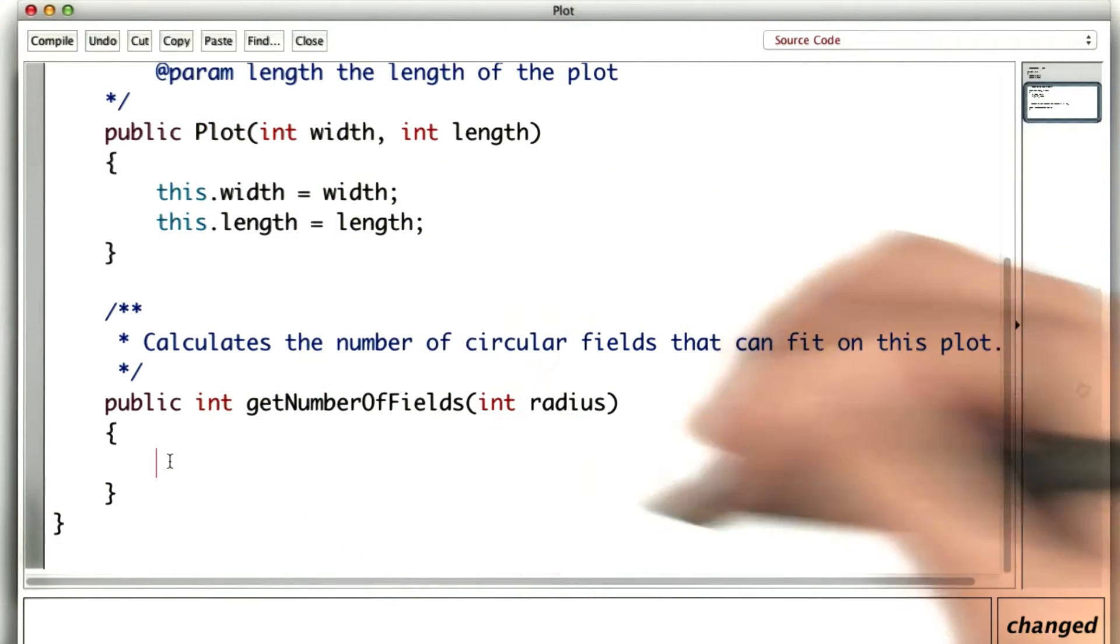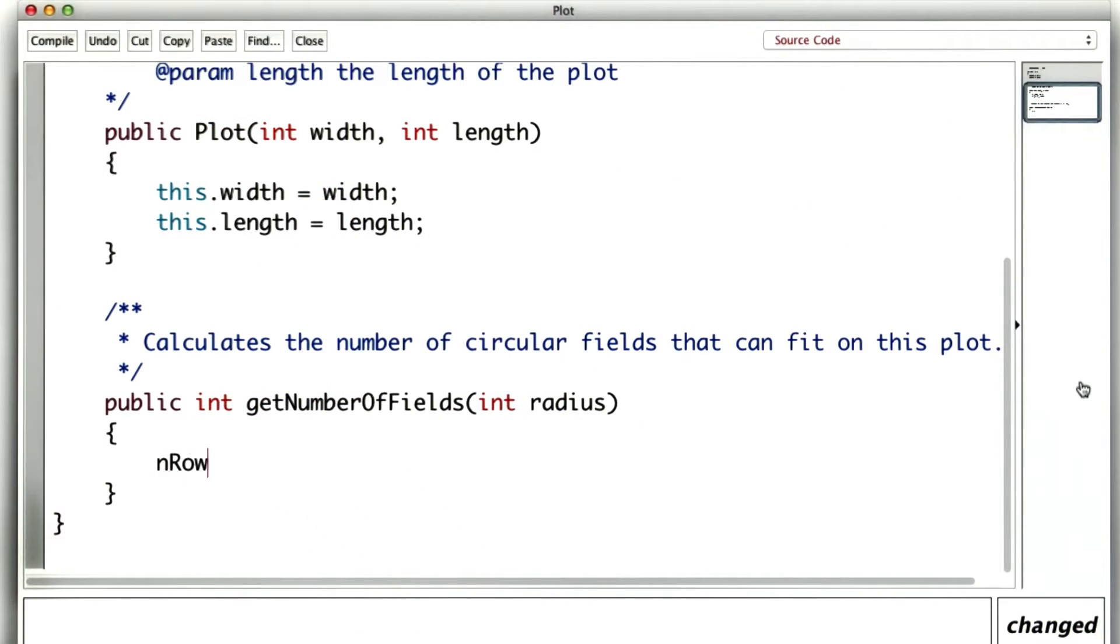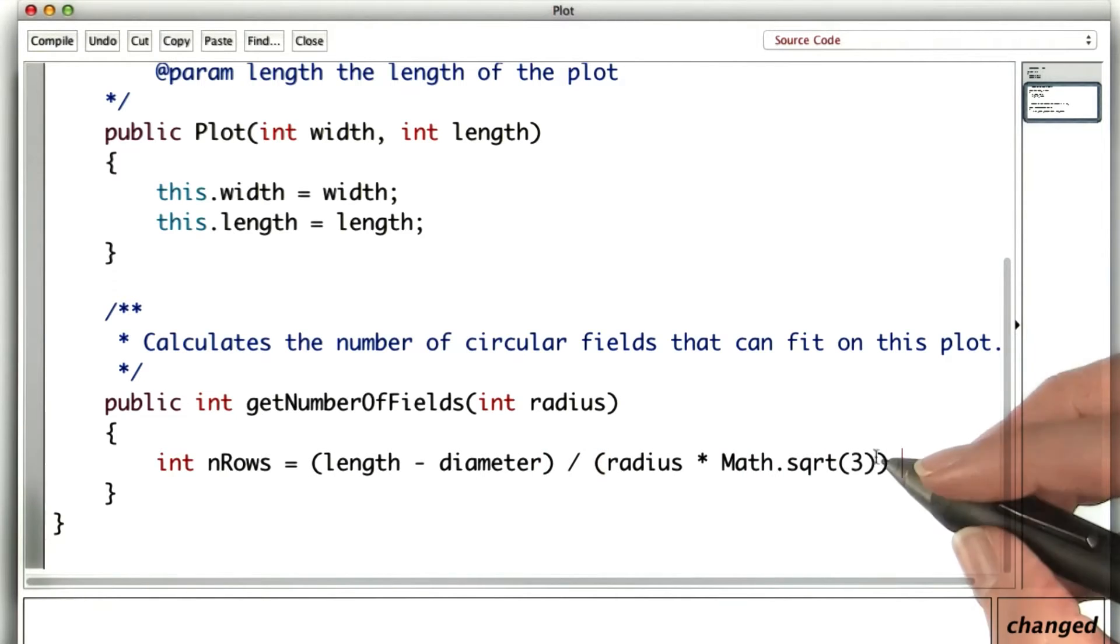Now to actually do the calculation, the first thing I do is calculate the number of rows, which should be an int. And the way that we did that was to calculate the length minus the diameter, divided by the radius times the square root of 3. But that wasn't counting the first row, so I've got to add the first row back.